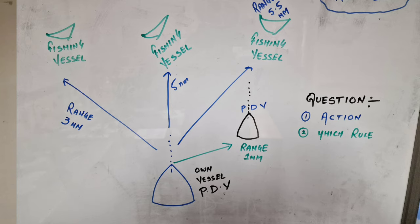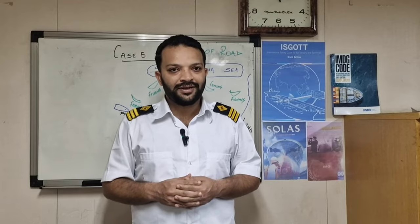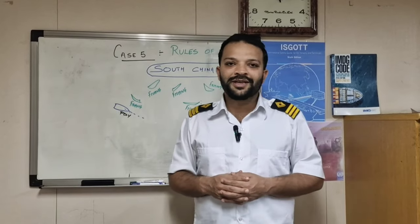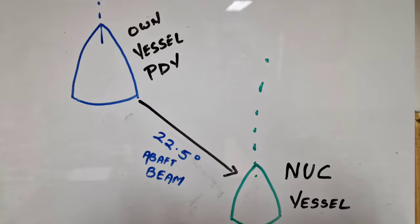Case number four is a little bit more complicated. You have a bunch of fishing vessels and one power driven vessel navigating in the same direction as your own vessel.